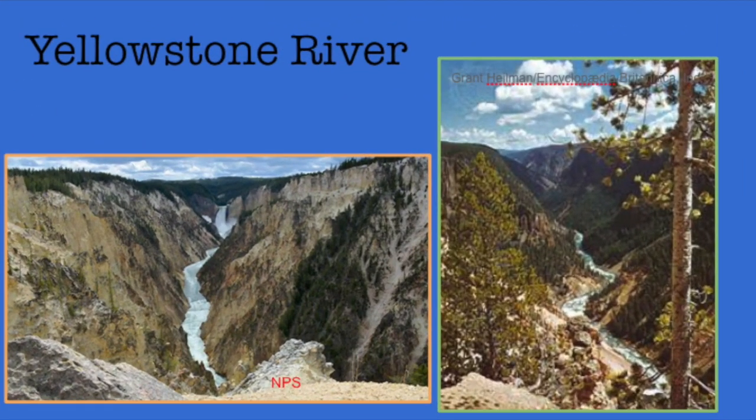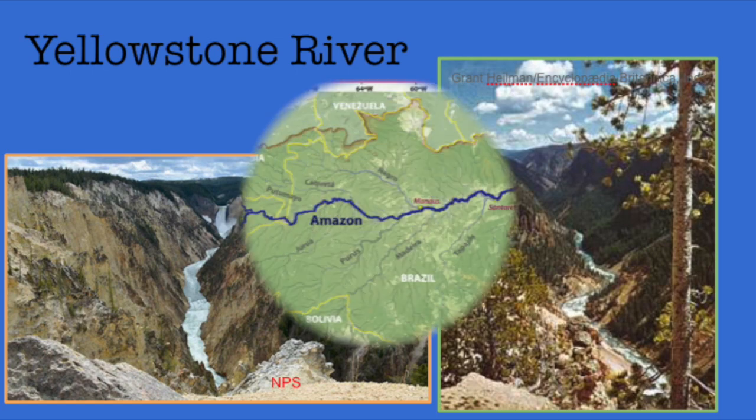The Yellowstone River starts in a sub-range of the Rocky Mountains. Most of the water is from snowmelt.